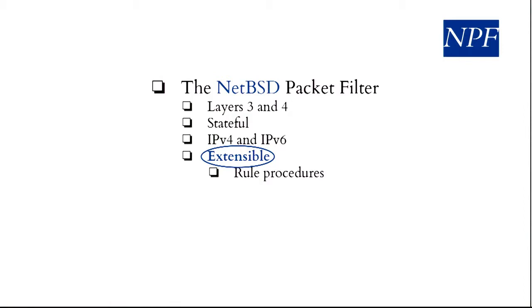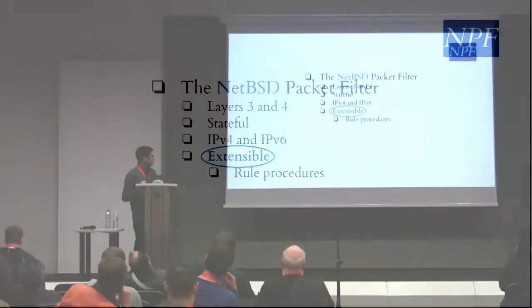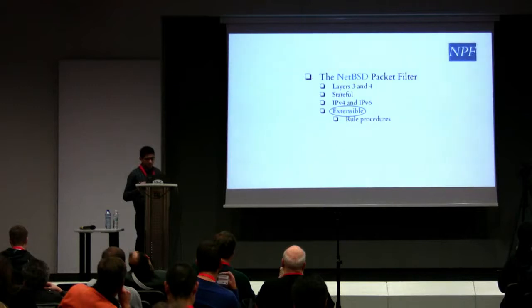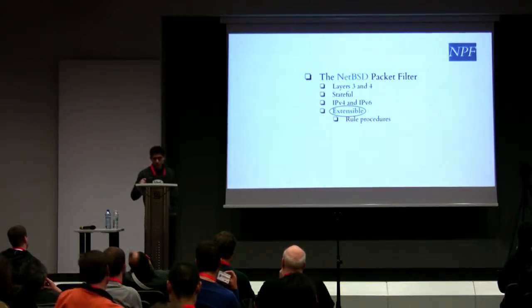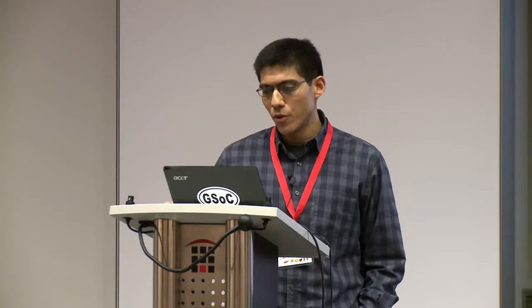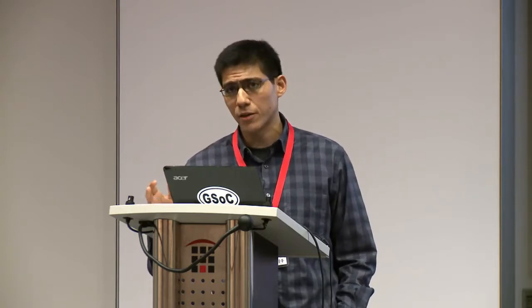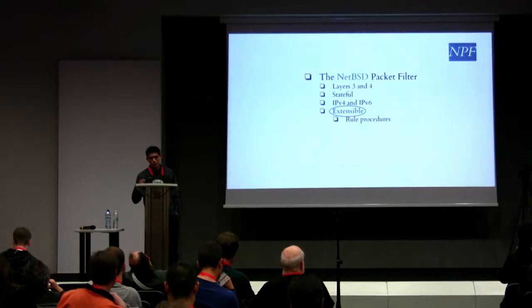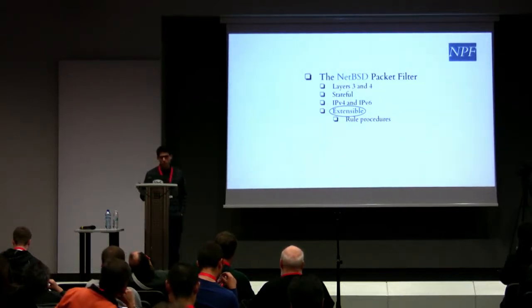NPF is the NetBSD packet filter. It supports layer 3 and layer 4 inspection, stateful filtering, IPv4 and IPv6. And it has a special feature important here — it is extensible. It supports rule procedures to be applied once a rule is matched. So, in the SSH protocol example, we can have an NPF rule — a regular firewall rule — to match the connection on the SSH port, and then apply our script to perform deep packet inspection.